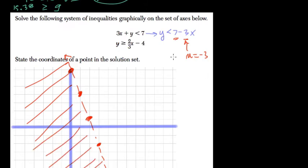The other line, y is greater than or equal to 2/3x minus 4. So minus 4, that's our y-intercept, negative 1, negative 2, 3, 4. Slope is 2/3, right. So we go up 2 over 3, up 2 over 3, and so forth.